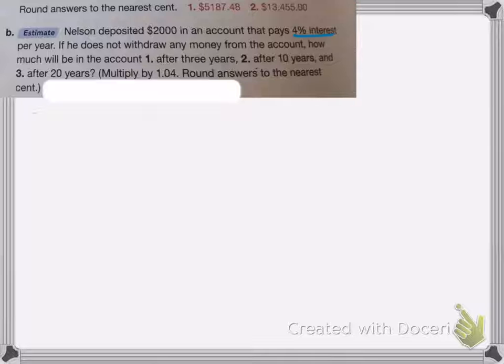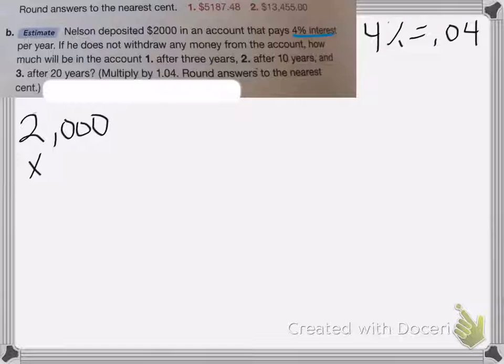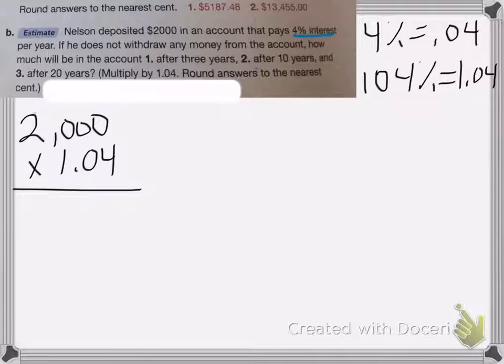So the first year, again, he has $2,000. And this time he only gets 4% interest. Well, 4% is the same as 0.04. Now the trick on this one is I can actually multiply it by 104%. And that gets rid of that extra addition step. And I'll show you in just a minute. So I'm going to multiply that by 1.04. Just add a 1 to it. And I'm going to multiply this out.